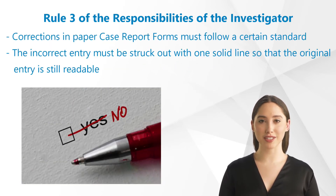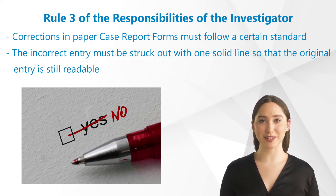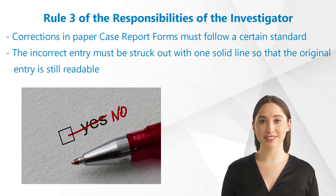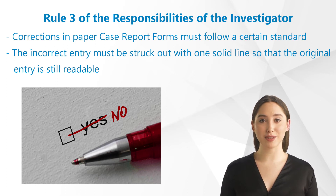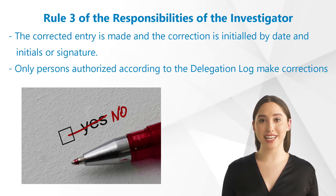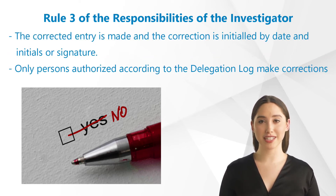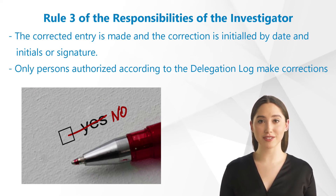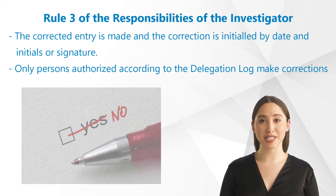In the course of an audit trail, corrections in paper case report forms must follow a certain standard. The incorrect entry must be struck out with one solid line so that the original entry is still readable. Then the corrected entry is made and the correction is initialed by date and initials or signature. It is also crucial that only persons authorized according to the delegation log make corrections.